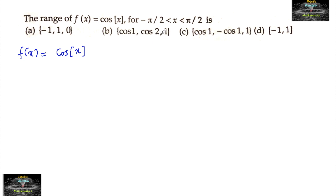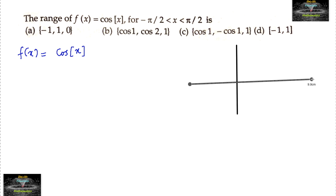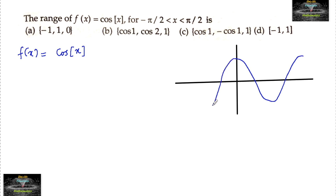Since x lies between minus π/2 and π/2, let me draw the graph of cosine. We can see this is a graph of cosine, with 0 and π/2 marked, and we need the range of f(x) within the interval minus π/2 to plus π/2 where x lies.